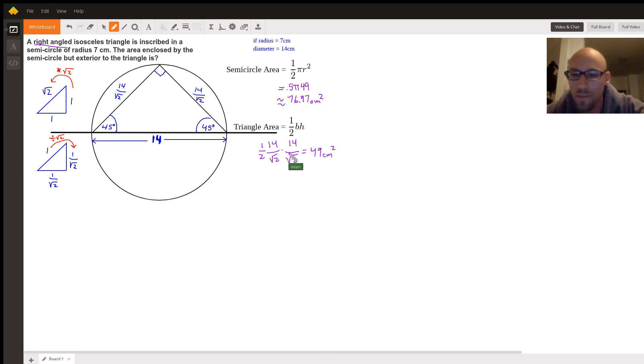Anyway, we want to find the area outside the triangle but inside the semicircle. So this shaded area here, all that, is going to be the big area minus the small area. So if we do 76.97 minus 49, we should come up on an area of 27.97.